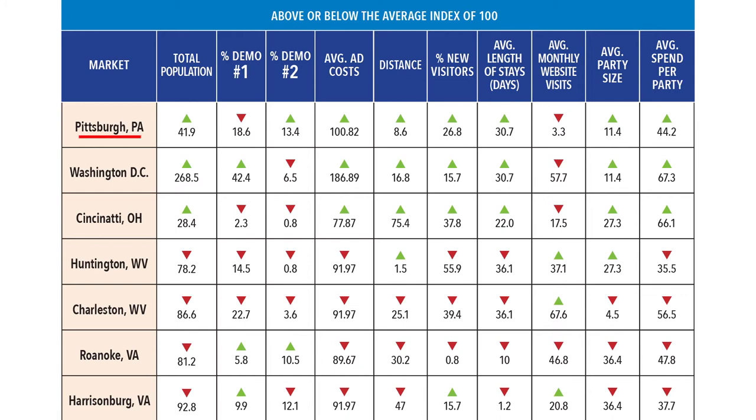For each of these markets, you're going to be putting in that specific information that pertains to each city. Once you've created your chart that houses all of the raw data, the next thing you need to do is understand how each of these markets perform against each other. What I like to do is create indexes, because an index tells you how each piece of information compares against the average. Once we have these indexes, we're able to translate them into a point value for the purposes of scoring each of the markets.